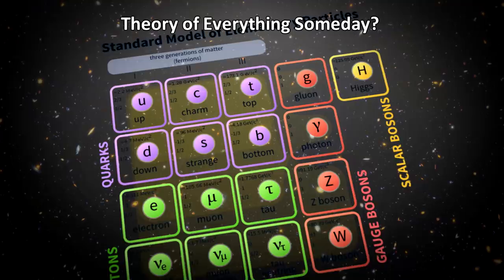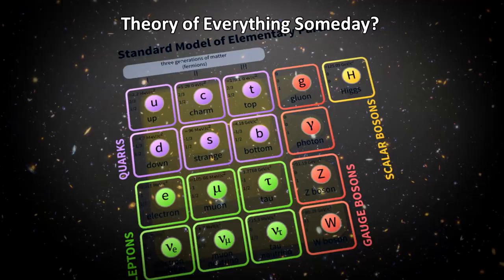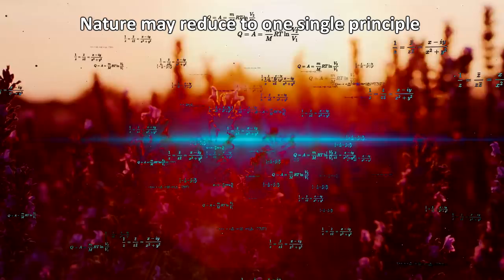Many scientists believe that science may someday have a theory from which the values of the existing physical constants can be derived or explained. What looks like fine-tuning may really be due to our ignorance of the underlying mathematics that would explain these constants. Nature may ultimately reduce to a single principle from which all these constants could arise. But we're not there yet.